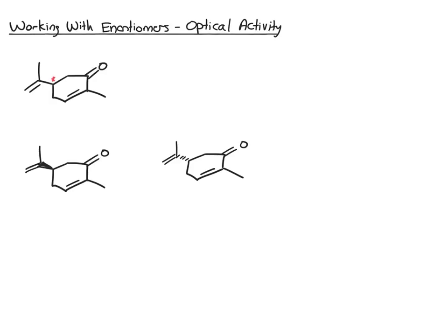In this section we're going to take a look at stereochemistry and specifically enantiomers in more of an experimental setting. The molecule shown here is called carvone, and it is a chiral molecule. Since it's chiral, it has two enantiomers, and I've drawn each of the enantiomers here.